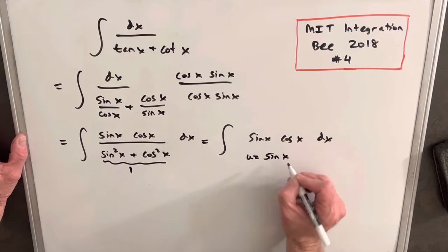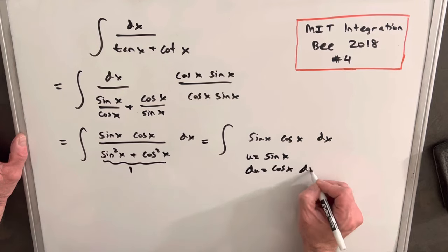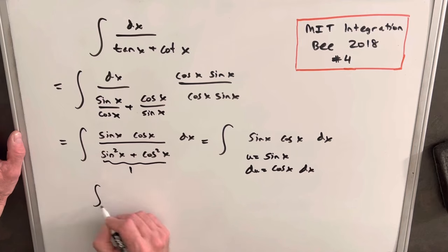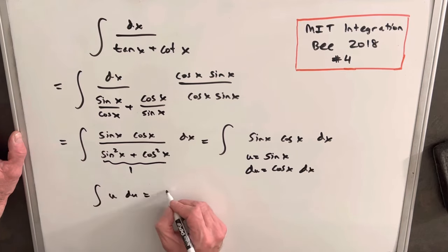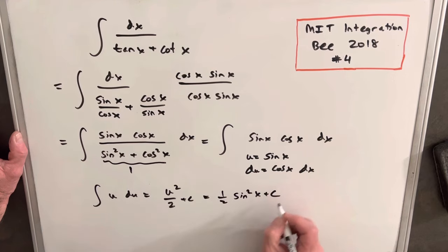so we'll call our u sine x, and our du is cosine x dx, and so we'll have just the integral of u du, which is u squared over 2 plus c, and that's just going to be 1 half sine squared x plus c.